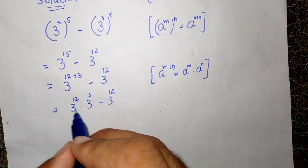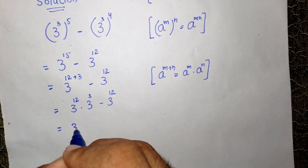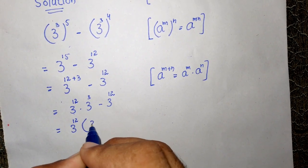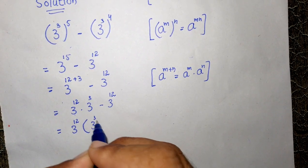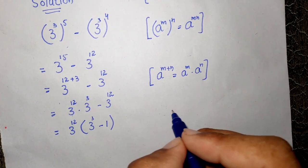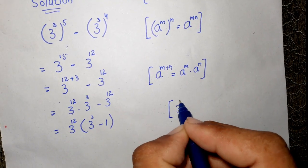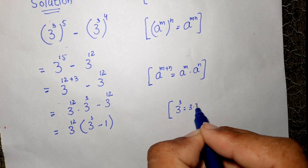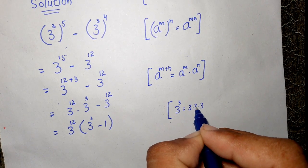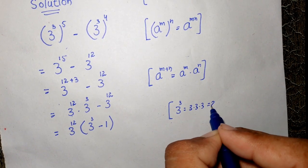Now here we have to take 3 to the power of 12 as a common factor. So taking 3 to the power of 12 as common, we have 3 to the power of 3 left, minus 1. We know that 3 to the power of 3 is equal to 3 times 3 times 3. 3 times 3 is equal to 9, and 9 times 3 is equal to 27.